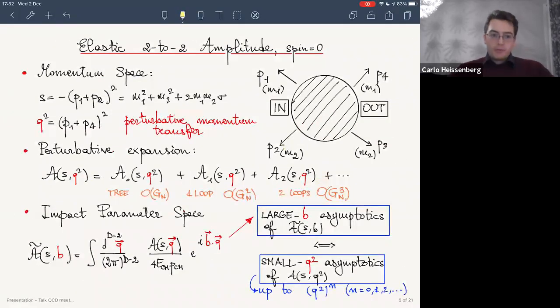The fundamental object from which we want to extract information is the elastic 2 to 2 amplitude for spinless objects, which we can regard in momentum space as a function of the square of the center of mass energy, S, and the perturbative momentum transfer, small q. In fact, the only way we have access to the calculation of the amplitude is the perturbative expansion in powers of G Newton. So we have a tree-level part, one loop part, and a two-loop contribution.